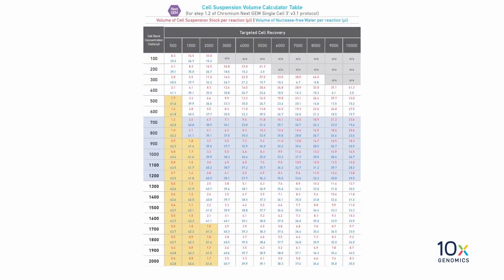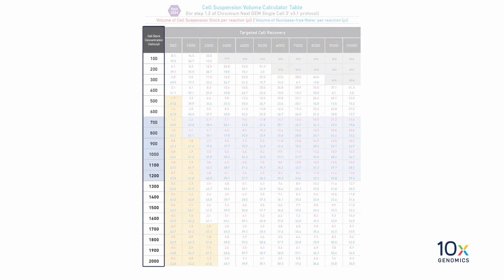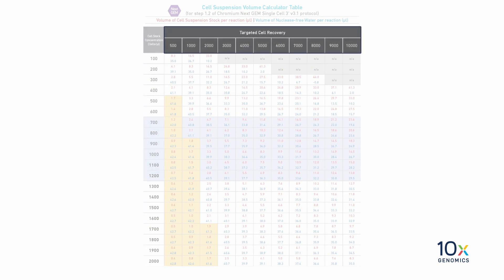First we will refer to the cell suspension volume calculator table in the user guide. The left column lists the cell stock concentration in cells per microliter. The row at the top lists the targeted cell recovery.